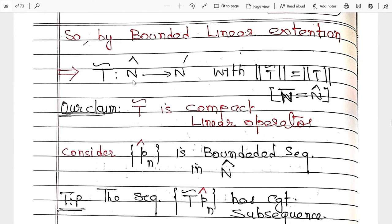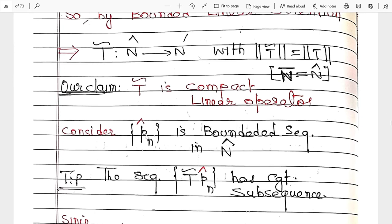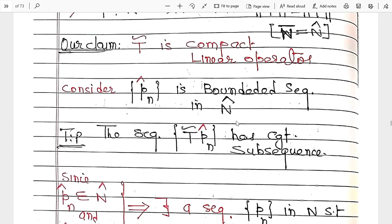Now if T(p_{n_k}) is convergent, then it converges to some vector — suppose that vector is Q (we can choose any name: x, y, z; here I choose Q). So T(p_{n_k}) approaches Q, where Q belongs to N-dash because it is convergent in N-dash. So T(p_{n_k}) is convergent to Q.